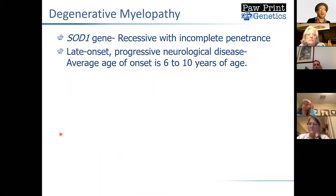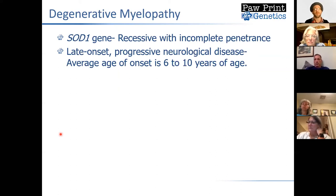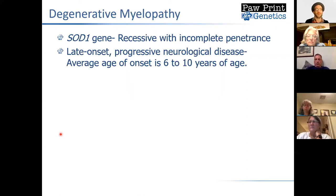Another condition talked about a lot in dogs is degenerative myelopathy. It's caused by a mutation in what we call the SOD1 gene, and it's a very close correlate to Lou Gehrig's disease — in fact, one of the causes of Lou Gehrig's disease is mutations in that exact same gene in people. It's a recessive disease that displays incomplete penetrance, meaning not every dog that inherits two copies of this specific genetic mutation will go on to develop disease, though a large number do, and we don't fully understand why some do and some don't.